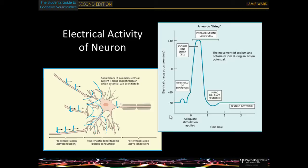The height of the action potential is fixed — a neuron doesn't half-fire. It's an all-or-nothing response. What does vary is how often a neuron produces one of these, sometimes called the spiking rate. On a millisecond scale, the whole process takes a few milliseconds, so you can have spiking rates up to about a hundred spikes per second. You can increase or decrease how often a neuron fires in a given period, but you can't vary the actual height of the action potential, as that's a fixed property of how chemicals flow across the membrane.